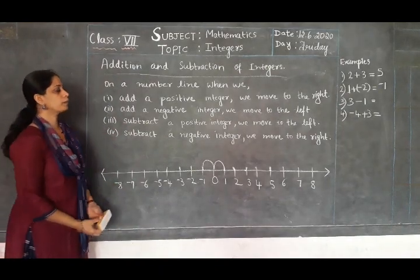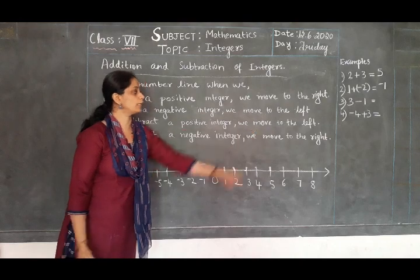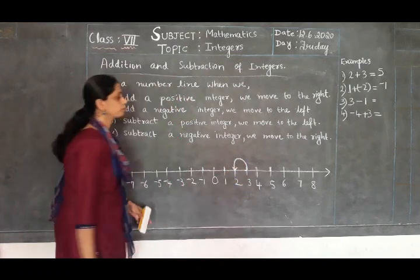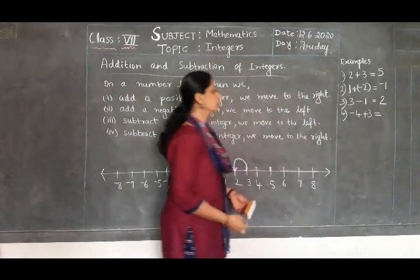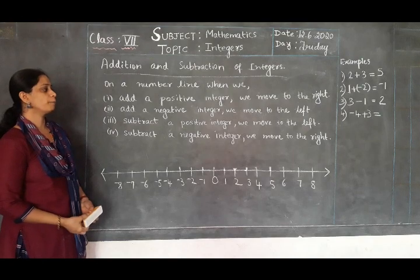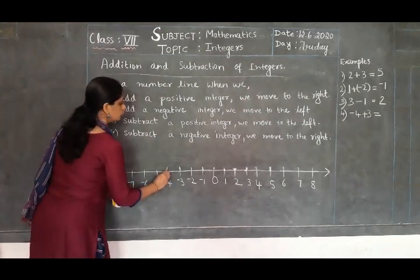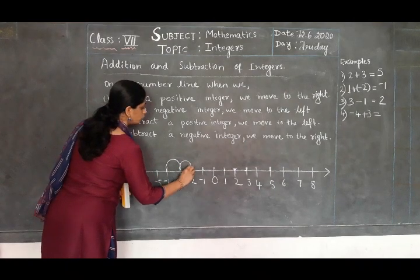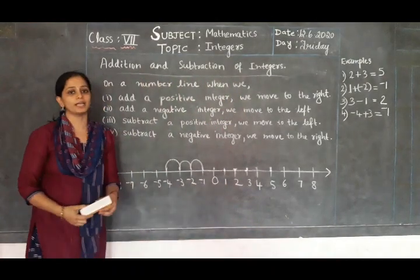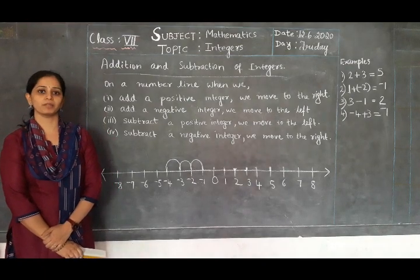Third example: 3 minus 1. When we subtract a positive integer, we move to the left. Starting from 3, we move one step to the left and get the answer 2. So 3 minus 1 equals 2. Fourth example: minus 4 plus 3. When we subtract — when we add a positive integer to a negative, we move to the right. Starting from minus 4, we move 3 steps to the right: 1, 2, 3. The answer is minus 1. So minus 4 plus 3 equals minus 1. I hope you understood this addition and subtraction of integers. Let us continue in the next class. Thank you.